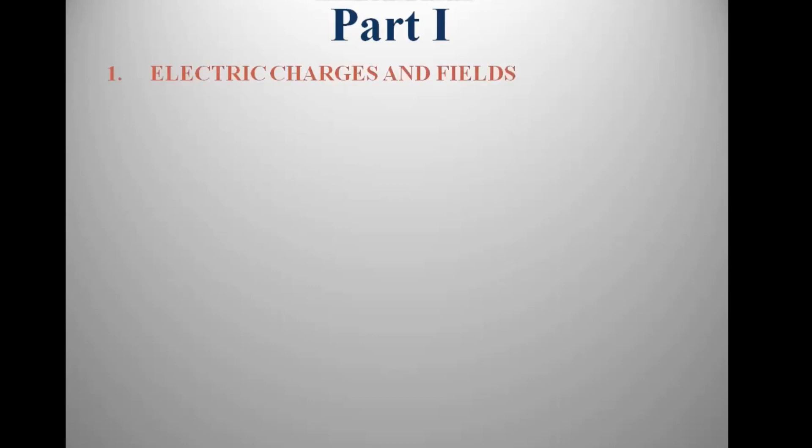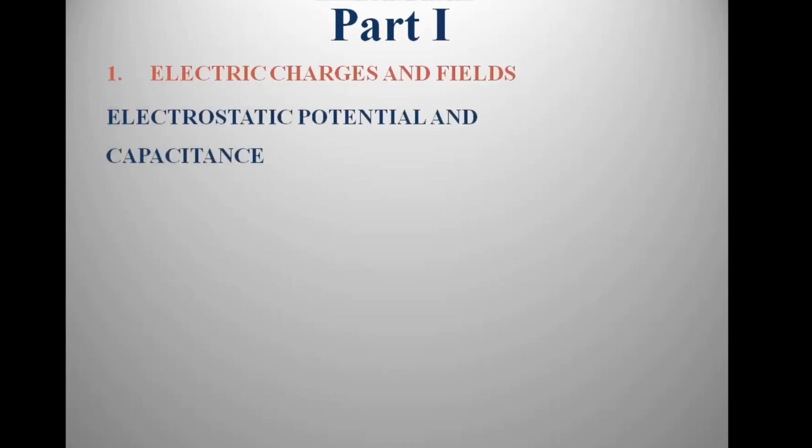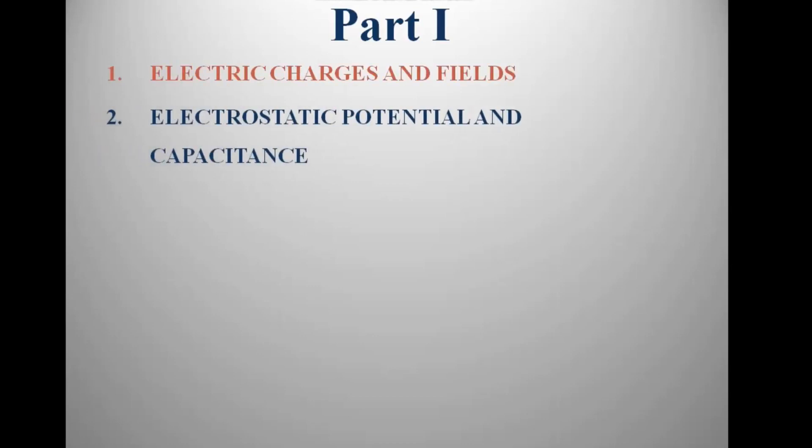The second chapter is Electrostatic Potential and Capacitance. The field and potential are two entities. The electric field is a vector, and electrostatic potential is a scalar quantity.